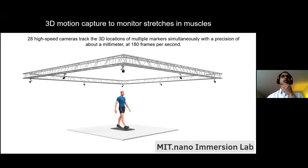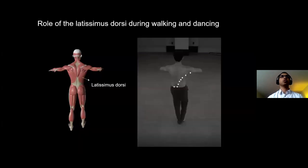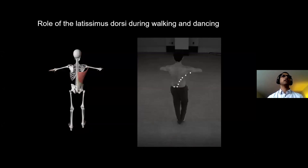To monitor stretches, we use 3D motion capture, specifically 28 high-speed cameras to track the 3D locations of multiple markers simultaneously with precision of about a millimeter at 180 frames per second. This is to monitor the length of muscles. I'll mostly be focusing on one muscle, the latissimus dorsi muscle. It's a big muscle in the back. The cameras pick up the locations of these reflective infrared markers and compute the 3D location very quickly and precisely.